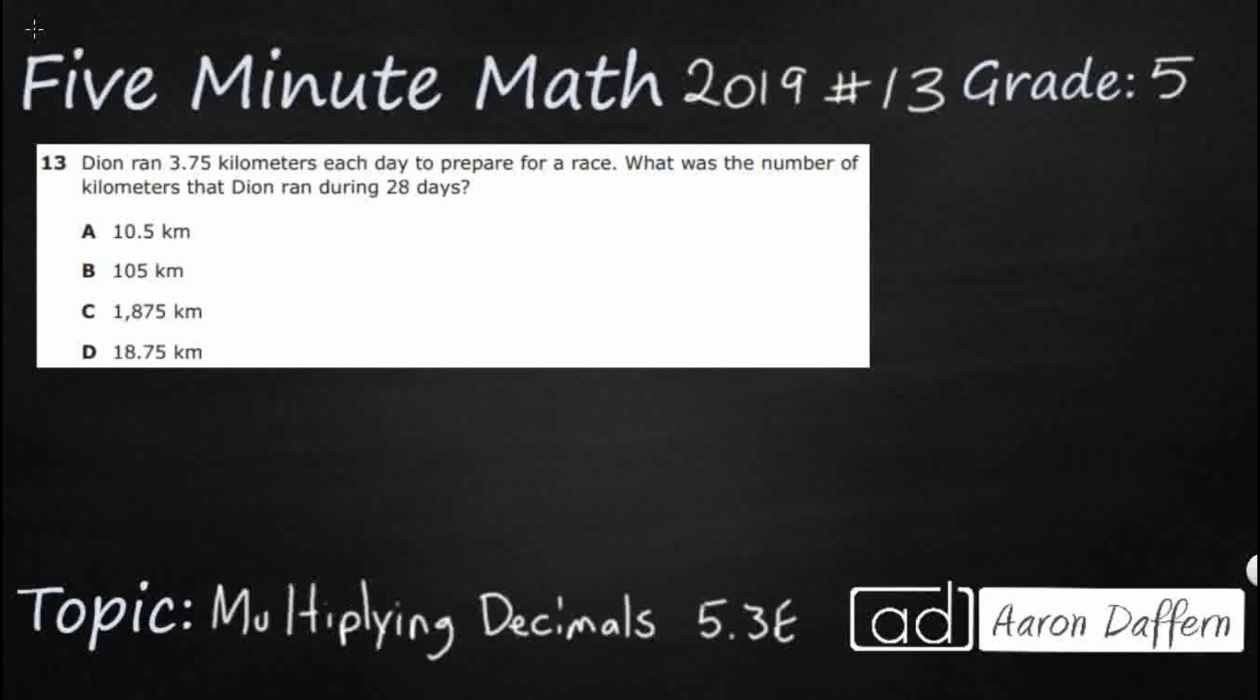So Dion is running 3.75 kilometers each day to prepare for this race, and apparently ran that 3.75 kilometers, or 3 and 75 hundredths, over 28 days. We want the total number of kilometers that Dion ran over the 28 days.